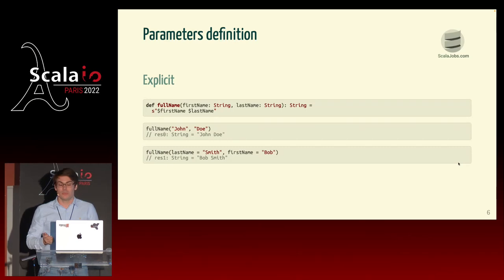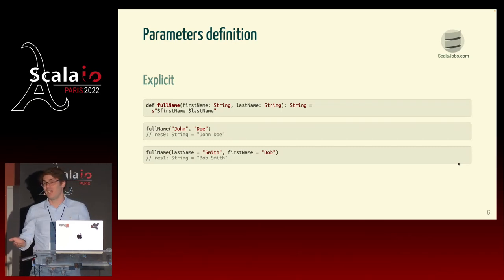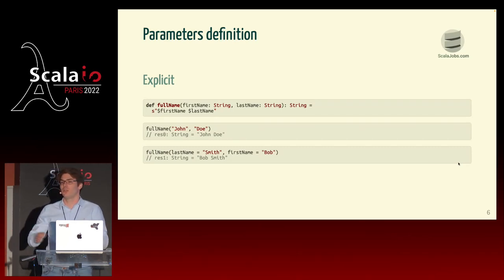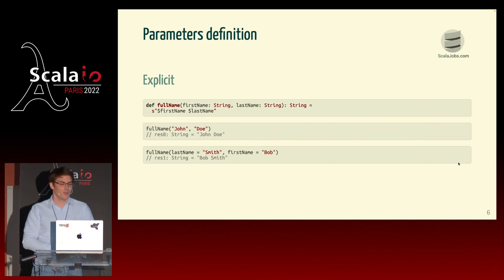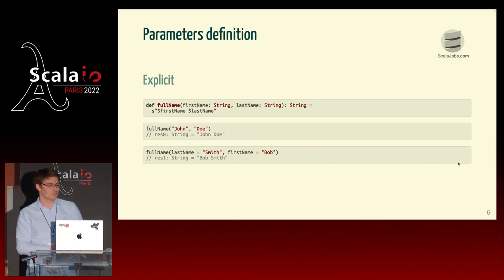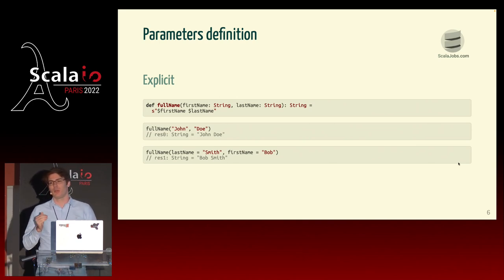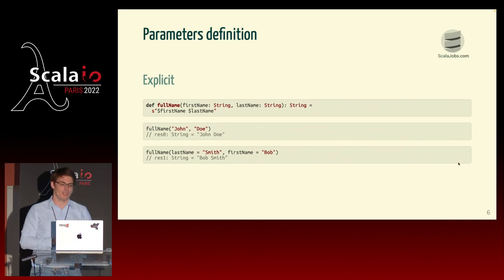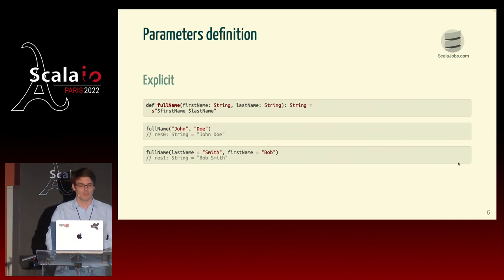We have good tooling around explicit parameters — we can track where they are used. So in a sense, we don't really need anything more fancy than that. But there are actually a couple of use cases when we need something slightly more fancy. So let's review them.